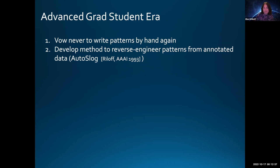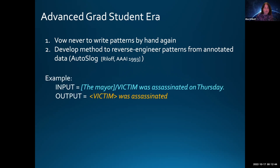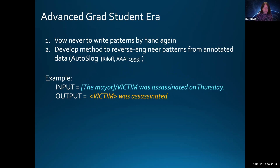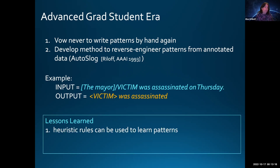AutoSlog was based on very simple syntactic heuristics mimicking what I felt I was doing when I read texts day after day. The input would be some sort of a sentence, with part of the sentence labeled with a semantic tag—like the mayor was a victim—and the output would be a syntactic pattern that was a more general way of recognizing contexts to extract references to victims. The lessons here were that heuristic rules can be used to learn patterns—rules being used to learn rules.